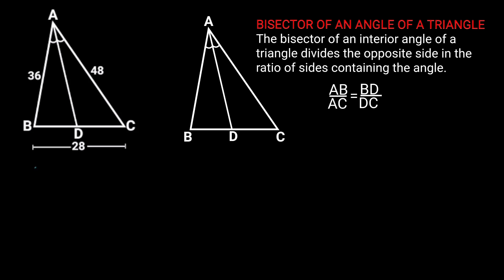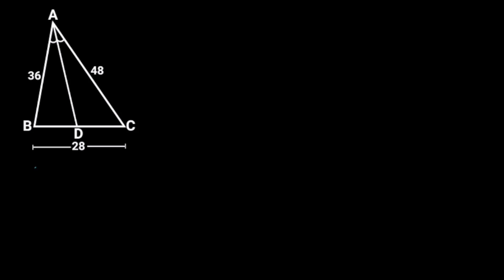From the question, AD is the angle bisector. So, AB over AC is equal to BD over DC.